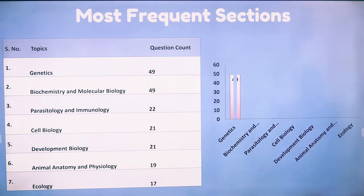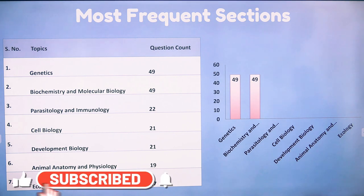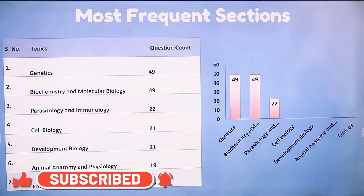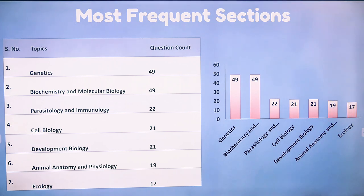The top 7 sections by question frequency are: genetics with 49 questions, biochemistry and molecular biology with 49 questions, parasitology and immunology with 22 questions, cell biology with 21 questions, developmental biology with 21 questions, animal anatomy and physiology with 19 questions, and ecology with 17 questions.